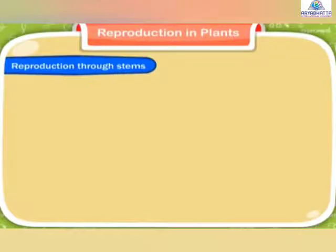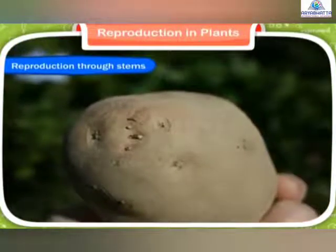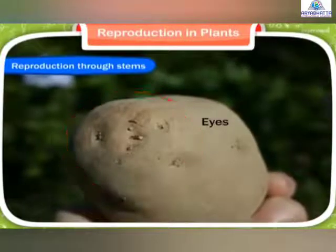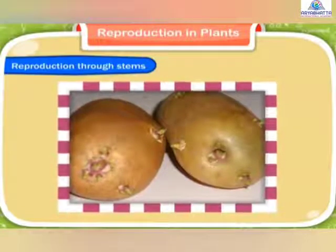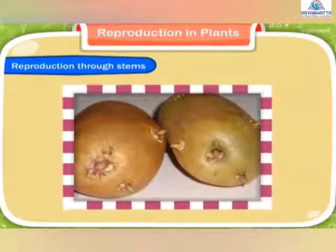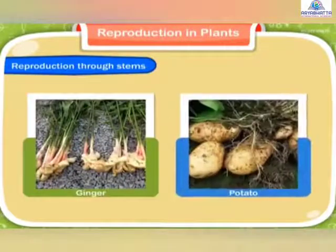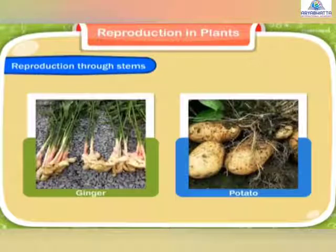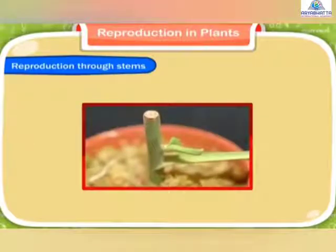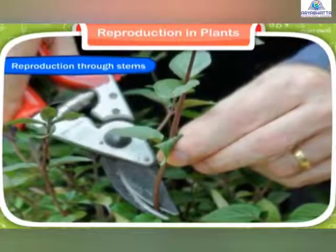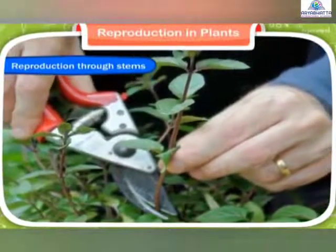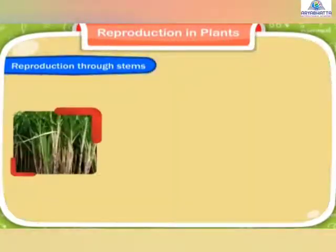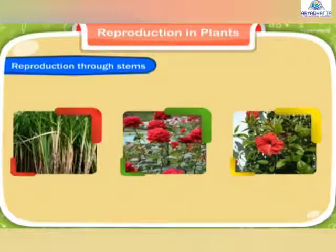Reproduction through stems. Have you observed a potato carefully? It has some small black dots on it called eyes. When an eye, also called a bud, is planted, it grows into a new plant. Several plants like ginger and potato are actually underground stems. These stems store food in them and grow into new plants through their buds. Some new plants can also grow from pieces of the stem called stem cuttings. Many plants like sugarcane, rose, hibiscus, etc. grow from stem cuttings.